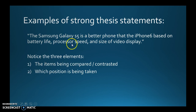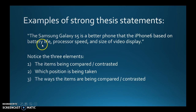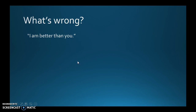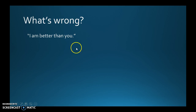Notice the three elements again: the items being compared and contrasted, which position is being taken, and the ways the items are being compared and contrasted — battery life, processor speed, and size of the video display. Now what's wrong with this thesis: 'I am better than you'? It is comparing two things — I and you — and it's saying one is better. We've got two of the elements, but how am I better than you? It doesn't say. It's missing those reasons, so it's not a good thesis because it has just two of the three elements.